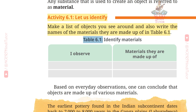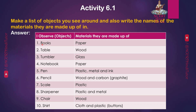Table 6.1 — Identify Materials. Column 1: I Observe. Column 2: Materials they are made up of. 1. Books — made of paper. 2. Table — made of wood. 3. Tumbler — made of glass. 4. Notebook — made of paper. 5. Pen — made of plastic, metal and ink. 6. Pencil — made of wood and carbon (graphite). 7. Scale — made of plastic.